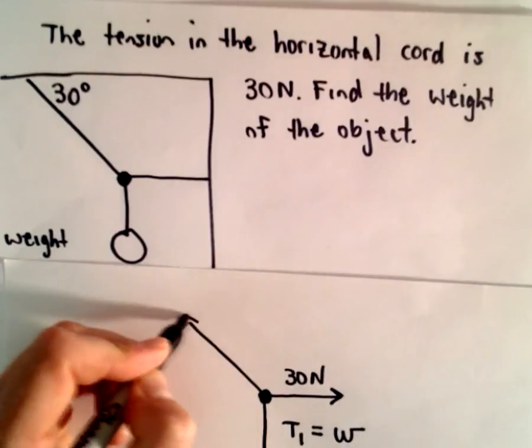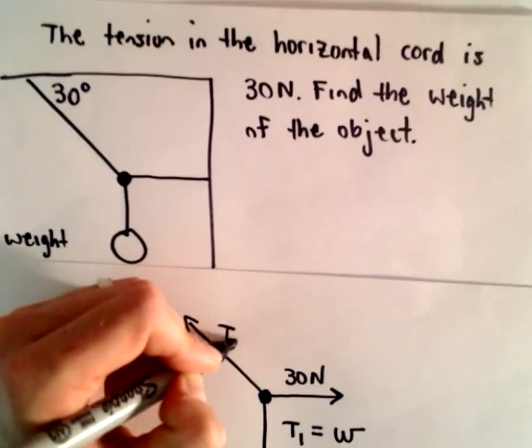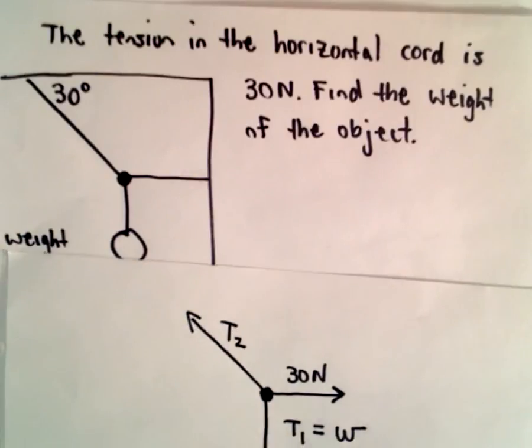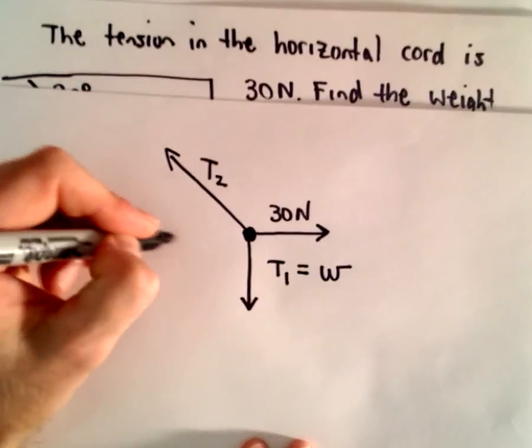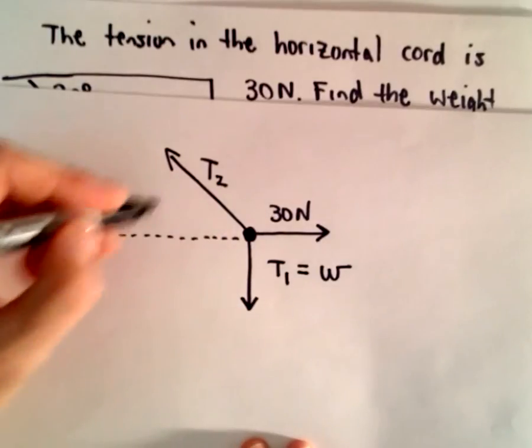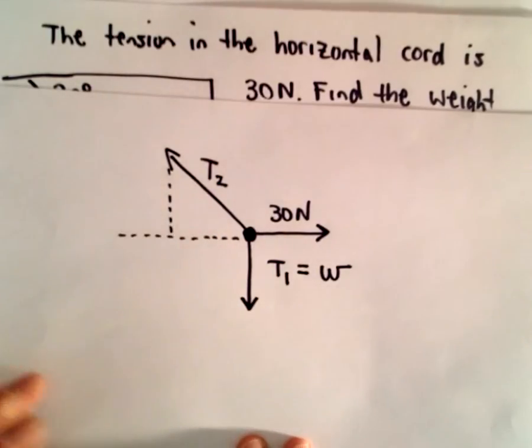Now, we also have this other cord. I don't know its tension. Let me maybe just label that as T2. What I'm going to do is I'm going to break down this left side into its horizontal and its vertical components.